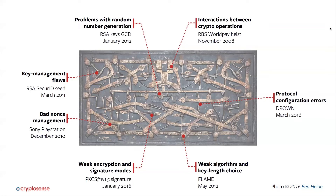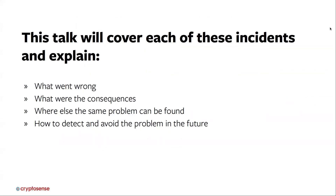And these things really do go wrong in practice. We've put examples here of real breaches and vulnerability disclosures that include faults in particular aspects of how cryptographic systems were put together. In the rest of this session we'll go through each of those incidents — what exactly went wrong in the cryptography, how an attacker was able to exploit it, what the consequences were for the organization, and where else we can find the same problem. The rest of this training course, being released on YouTube over the next few weeks — so subscribe — will cover how to detect and avoid these problems, either by manual review or automated tooling.